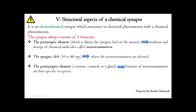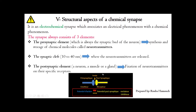The synaptic cleft is the third element of the synapse — a small space of 10 to 40 nanometers that separates the pre-synaptic element and the post-synaptic element, where the neurotransmitters are released. So the message is first electrical in nature in the pre-synaptic neuron, then the pre-synaptic neuron releases neurotransmitters into the synaptic cleft where the message becomes chemical, and then the neurotransmitters bind to the post-synaptic membrane and perturb its membrane potential, making the message electrical again.